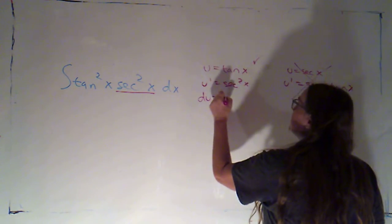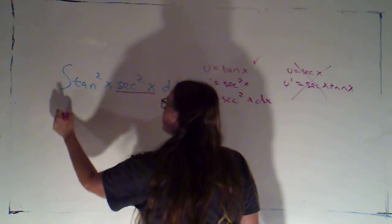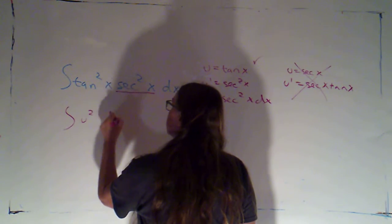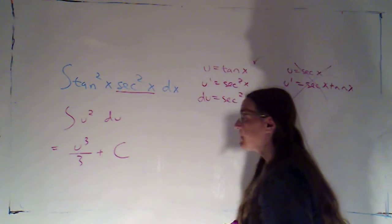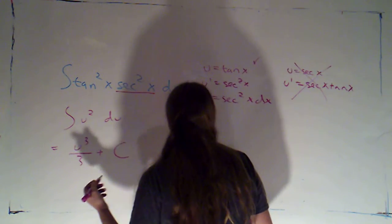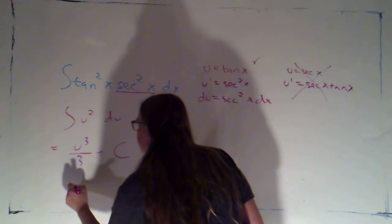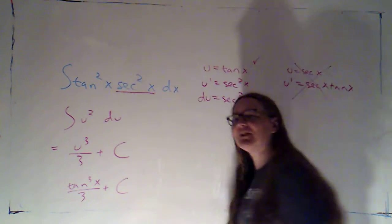So here, du would be secant squared x dx. So this just becomes u squared du. That's going to become u cubed over 3 plus c. And then with indefinite integrals, we want to remember to go back to the original function. So u was tangent. So that would be tangent cubed x over 3 plus c.